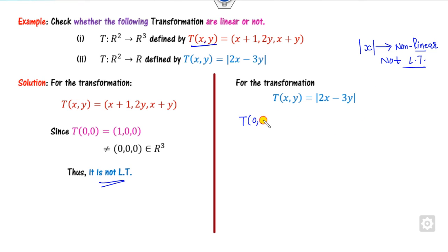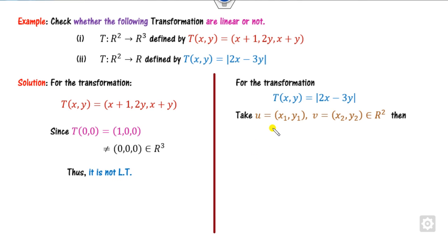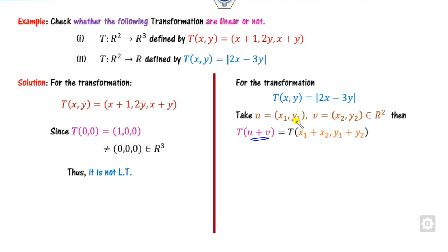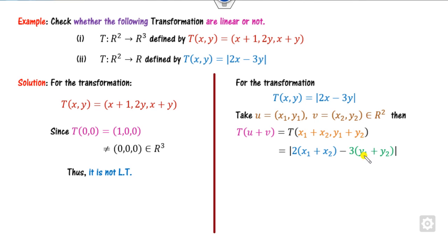You can clearly see that T of (0, 0) is 0, so the first property is satisfied. Take two elements U and V from the domain R. Starting from T of U plus V, you add them and substitute x and y. So it gives 2x minus 3y.